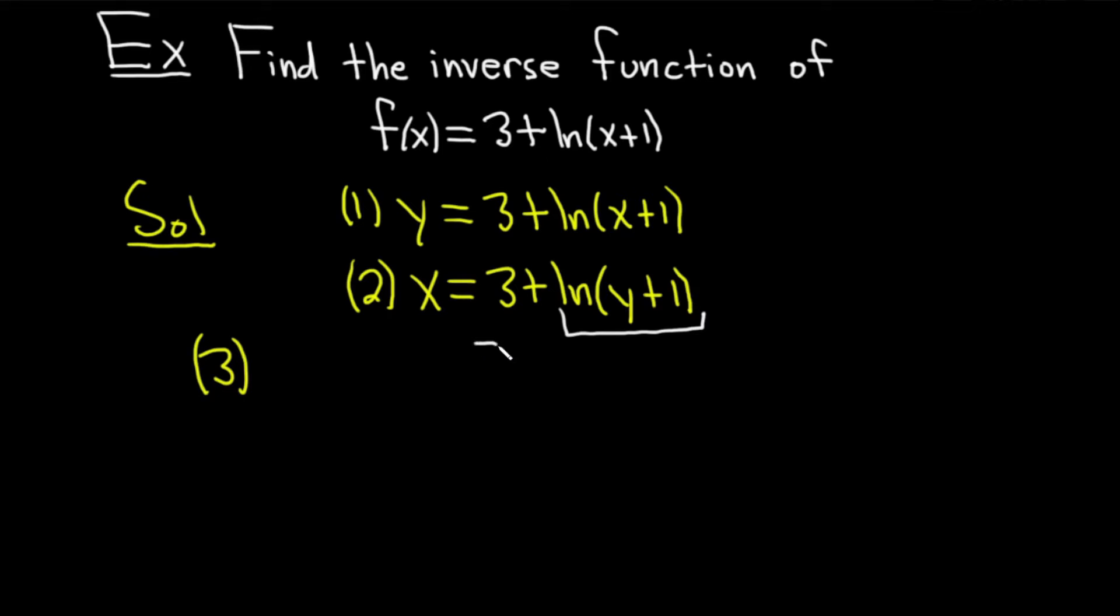So we'll start by subtracting 3 from both sides. So minus 3 minus 3. It gives us x - 3 = ln(y+1). Good stuff.